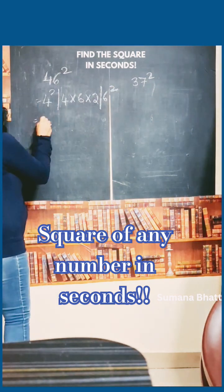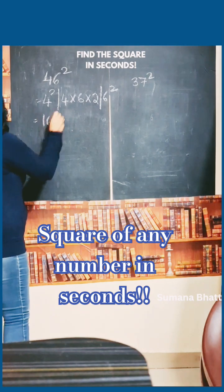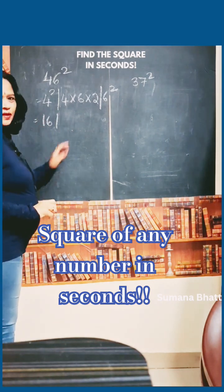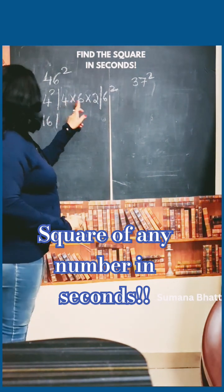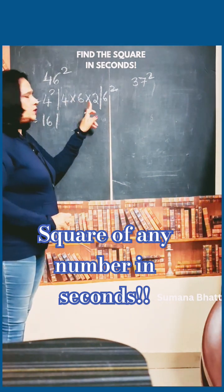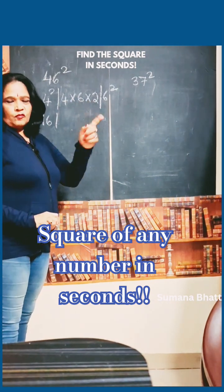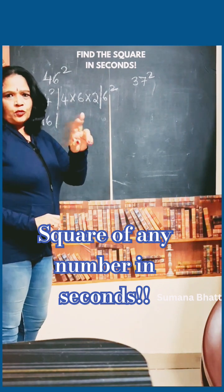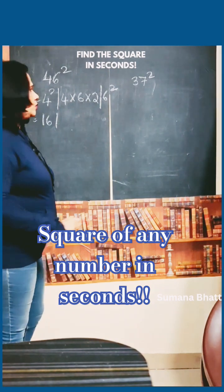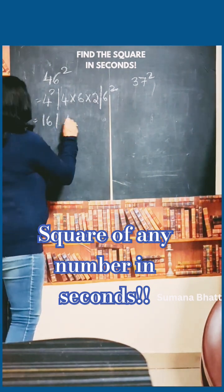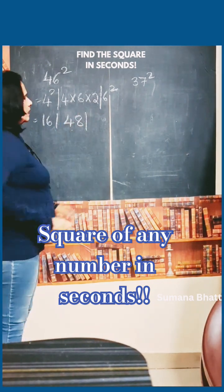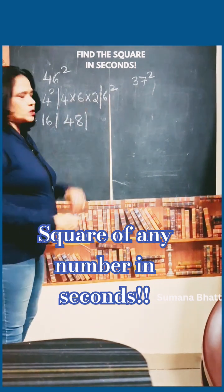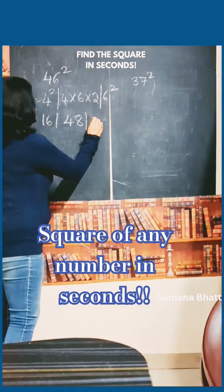4 square is 16. Then 4 into 6 into 2: 4 times 6 is 24, and 24 into 2 is 48. And 6 square is 36.